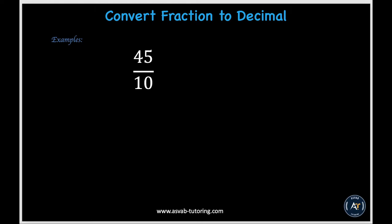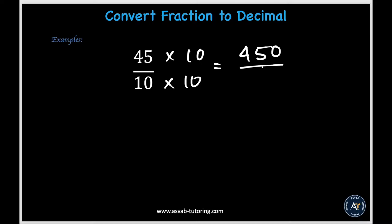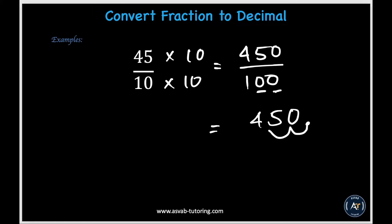In this last example we have 45 over 10. We'll use the same method and turn our denominator into 100. We know 10 times 10 gives us 100, and whatever we do to the bottom we must also do to the top, so we multiply 45 by 10 as well. Our equivalent fraction ends up being 450 over 100. The number 450 has an invisible decimal point at the end. With two zeros after the 1 in the denominator, we move the decimal point two places to the left — ending up between the 4 and the 5. Our final decimal is 4.5.